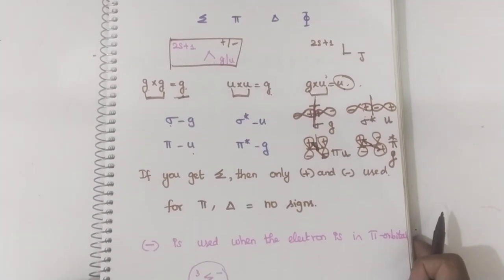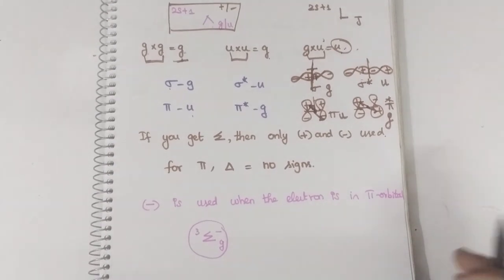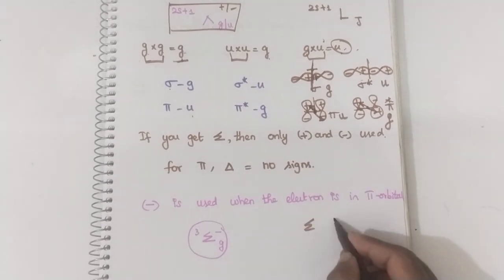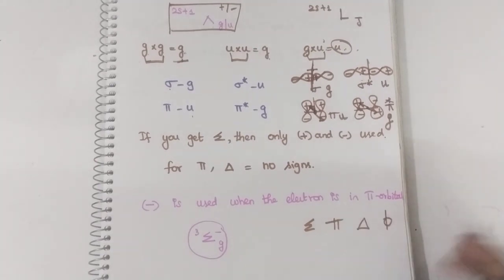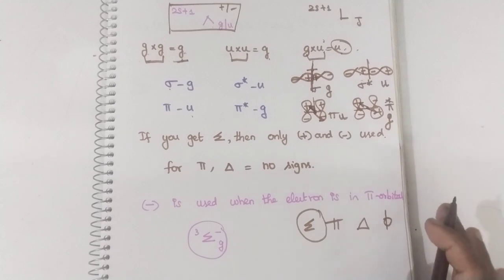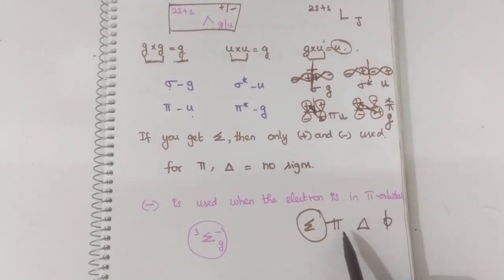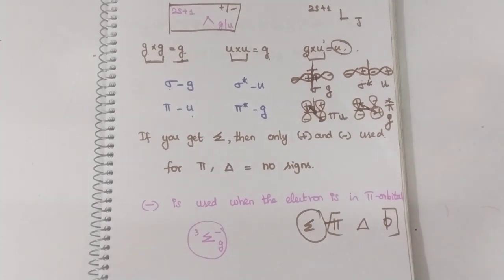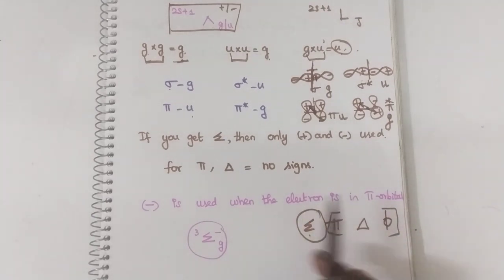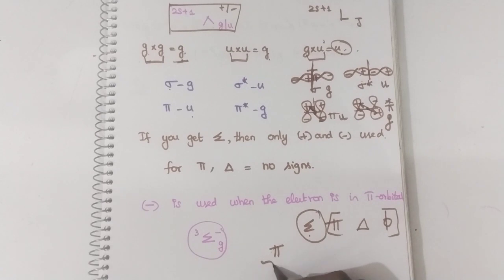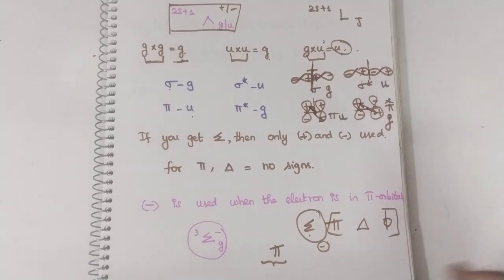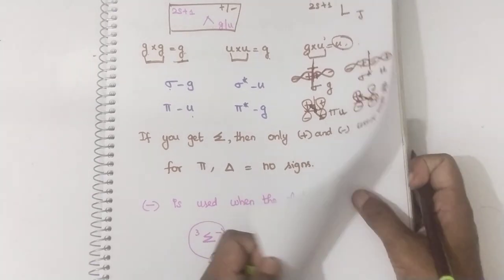There are various spectroscopic terms: sigma, pi, delta, phi. Among these, only for sigma will we use the plus and minus symbol. For other terms — pi, delta, and phi — we won't use plus and minus symbols. Plus and minus subscripts are used only for sigma. And if the electron is filled in the pi orbital, then we will include a minus symbol. I will explain these in detail.